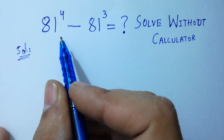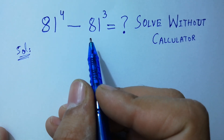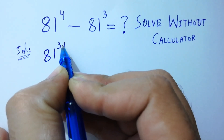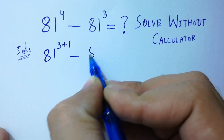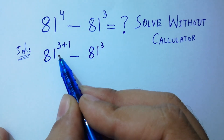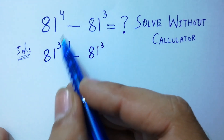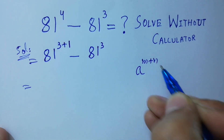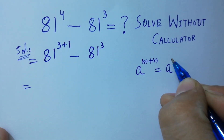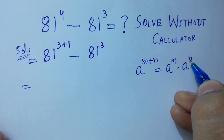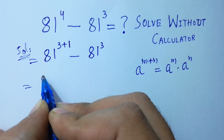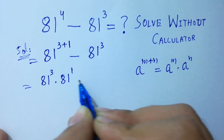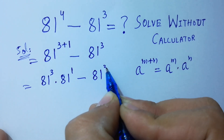81 to the power 4 minus 81 cubed is the same as 81 to the power 3 plus 1 minus 81 cubed, because 3 plus 1 equals 4. Since a to the power m plus n equals a to the power m times a to the power n, we get 81 cubed times 81 to the power 1, minus 81 cubed.